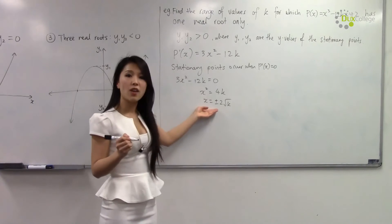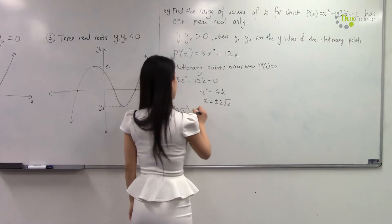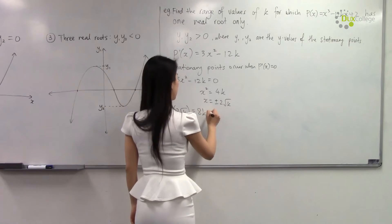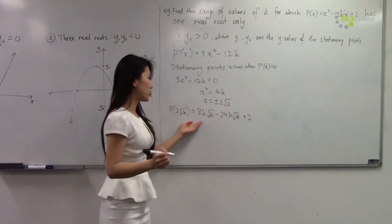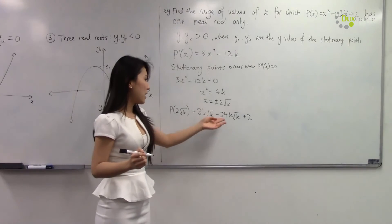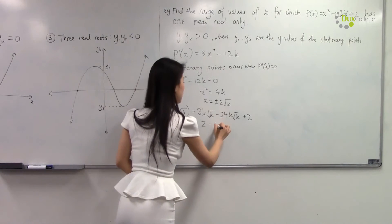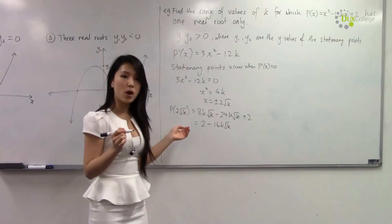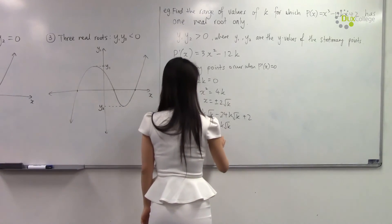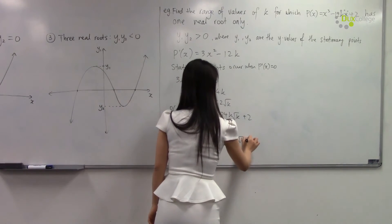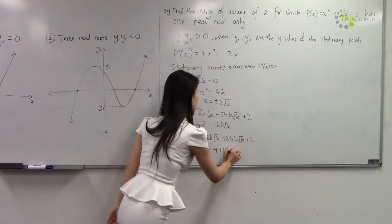Now we need to find the y-values, so we substitute the x-values back into p(x). After substituting, you should get 8k√k - 24k√k + 2, and simplifying this we get 2 - 16k√k. For the other stationary point you should get 2 + 16k√k.